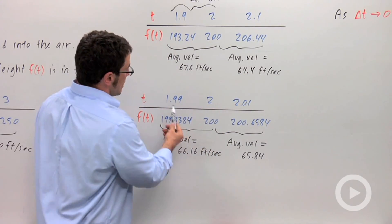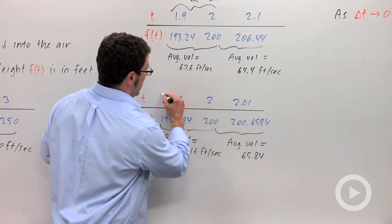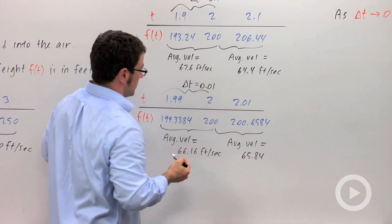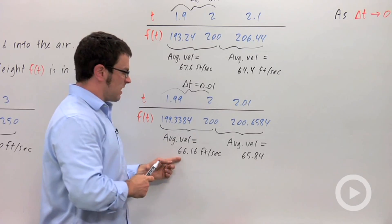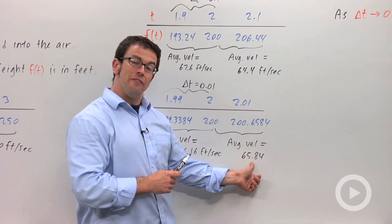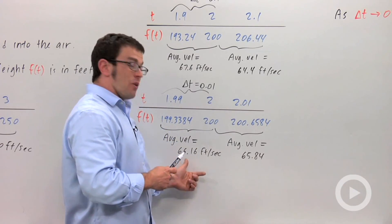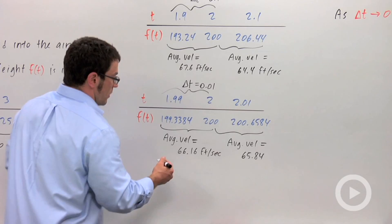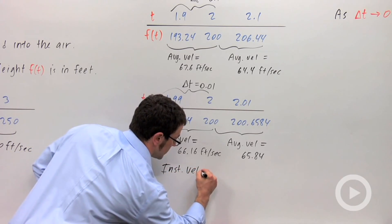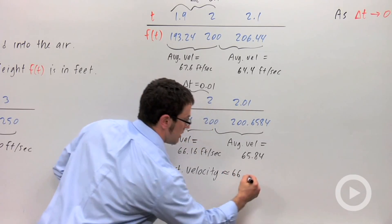Now let me go a step further. Let me go to 1.99 and 2.01. Here the delta t value is 0.01. And the average velocity on the left is 66.16, on the right 65.84. To the nearest unit these both round to 66. So you might say that the instantaneous velocity is approximately 66 feet per second.